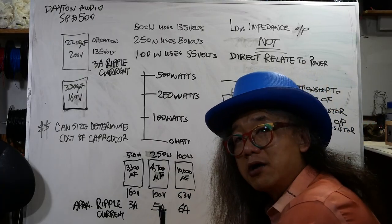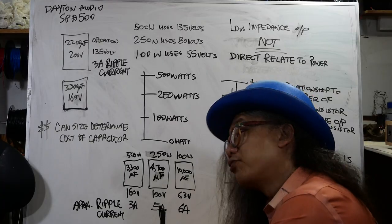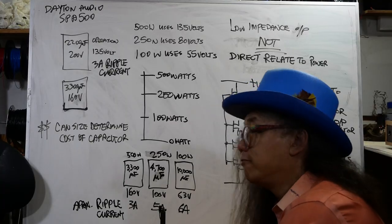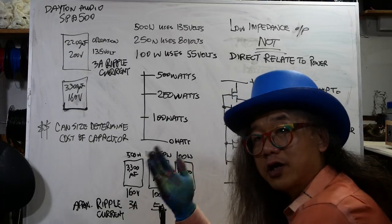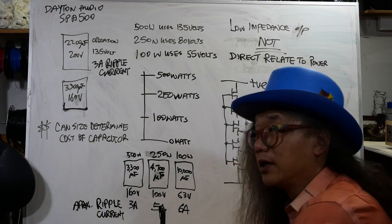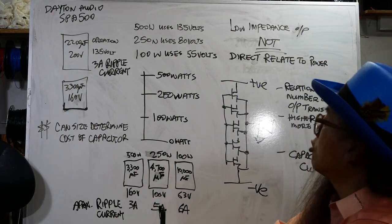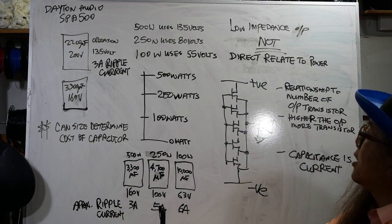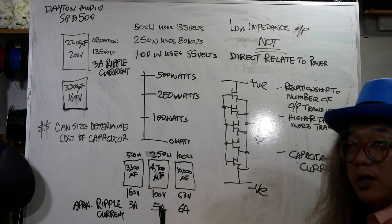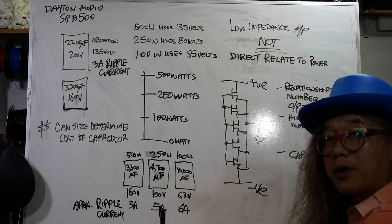If they have to sell it for a price point, then you have to cut corners. And most of the time they cut in the power supply. I hope this explains some of the reason that manufacturers cut corners on the power supply.